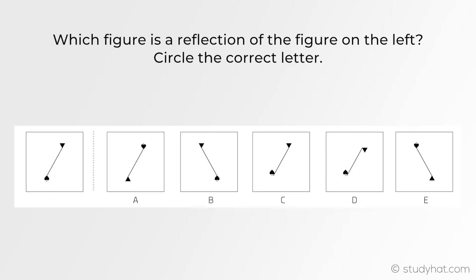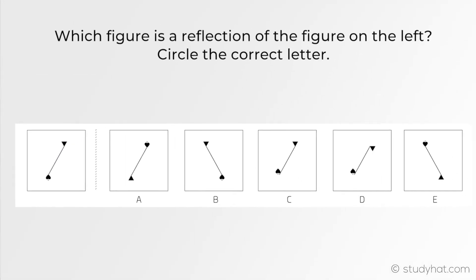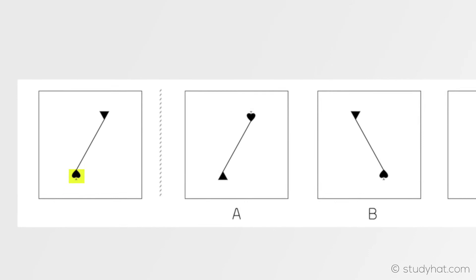Let's move on to the next question. Which figure is a reflection of the figure on the left? Circle the correct letter. Okay once again it's a vertical reflection which means everything moves to the opposite side. This triangle that's on the right should appear on the left once reflected and this shape here should move from the left to the right hand side.